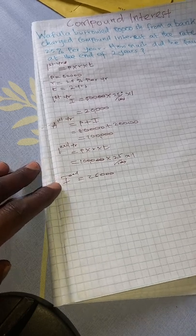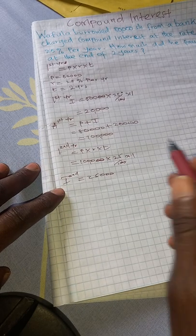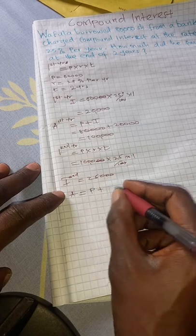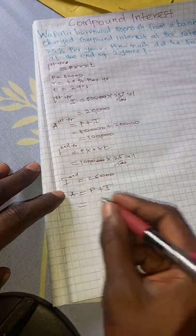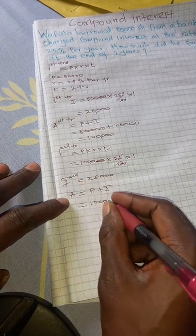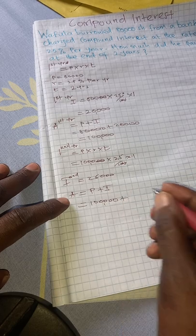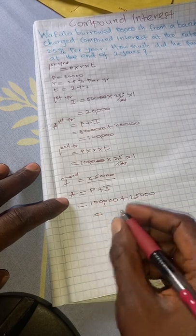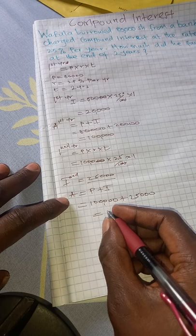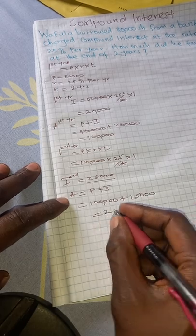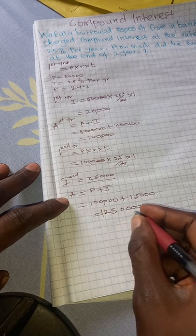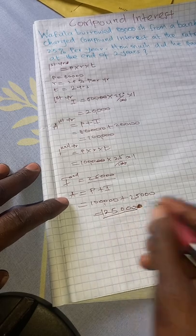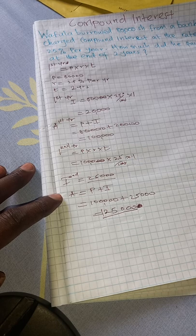To now get the answer for the question — the amount which was to be paid back at the end of two years — we say amount equals principal plus interest. We add the principal for the second year, which is 100,000, plus the interest for the second year, which is 25,000, and we get the amount to be returned at the end of two years: 125,000. This is the amount which was to be returned at the end of two years.